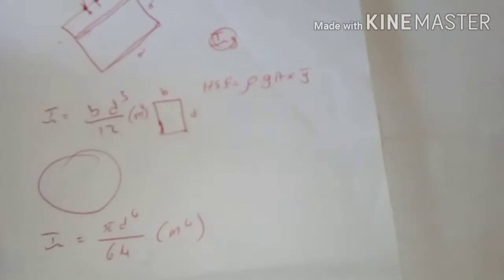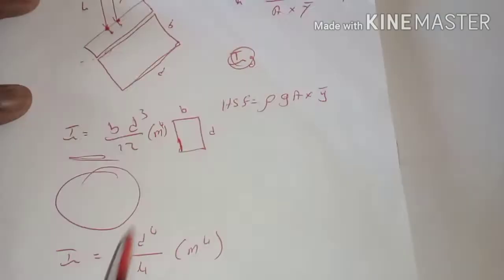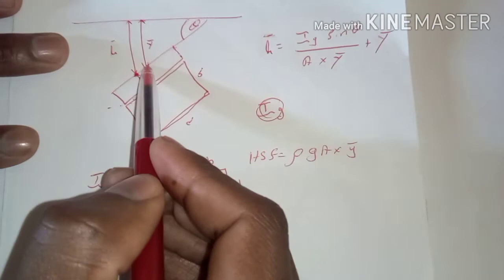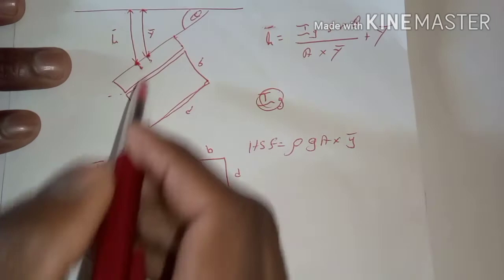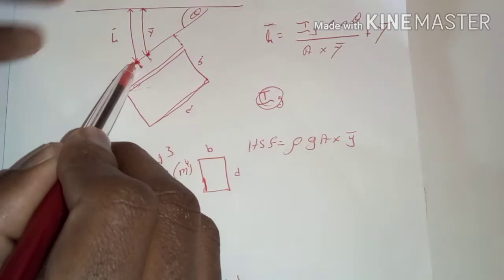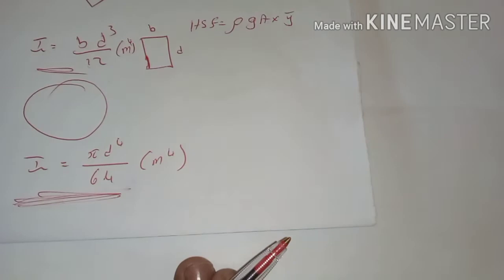So these are the new things we are introducing: y-bar is no longer measured along the length of the object but from the centroid to the surface of the fluid. Similarly, our center of pressure is no longer calculated considering the length of the object, but from the point where the center of pressure is to the surface of the fluid.